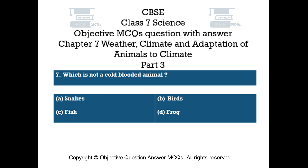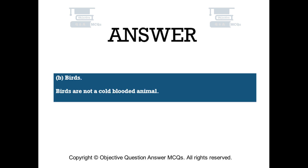Question number 7. Which is not a cold-blooded animal? Option A: Snakes. Option B: Birds. Option C: Fish. Option D: Frog. The right answer is Option B — Birds. Birds are not cold-blooded animals.